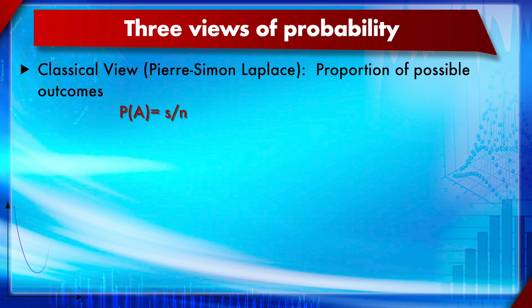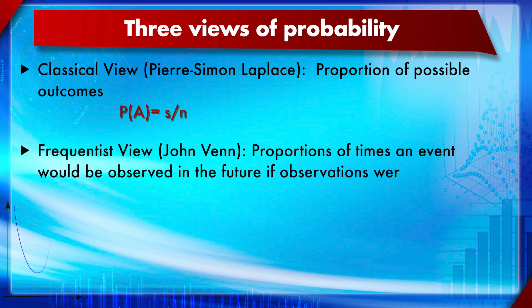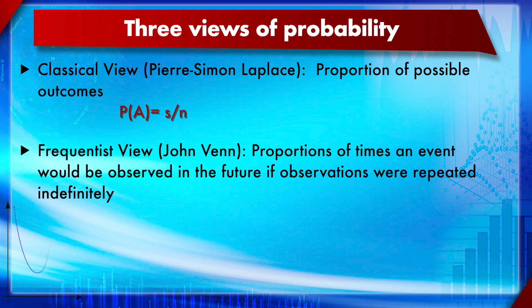The second view is the frequentist view, credited to English mathematician John Venn — the same person behind the Venn diagram used in logic. It defines probability as the proportion of times an event would be observed in the future if observations were repeated indefinitely. Frequency is what matters here. It is commonly used in weather predictions — for example, over the last 10 years on a particular day there had been no rain, so the probability of rain on that day is very low.